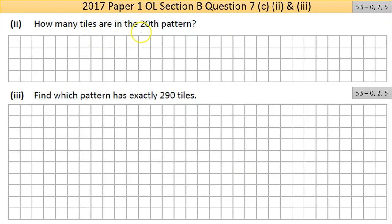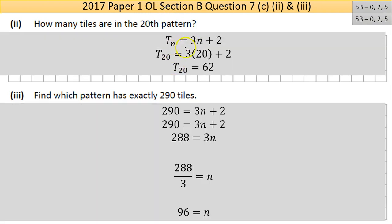C part 2 says how many tiles are there in the 20th pattern. We now know that T, total number of tiles, equals 3n plus 2, so we can work out how many tiles in any pattern. You have your formula there, we put in 20 instead of n, using function notation. Put it through in the calculator and get an answer of 62.